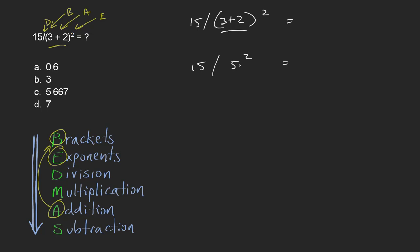So 5 to the power of 2 is 25 and so I'm looking at 15 over 25. 15 over 25, let's see, that's the same as 3 fifths so that's going to be 0.60 and that means that my answer is a.